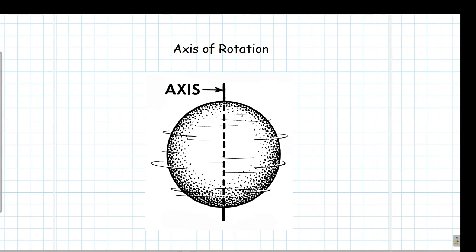All the points inside a rigid body make circular paths when executing rotational motion, and the centers of these circular paths lie along a straight line. For example, if a hard sphere is rotating, all points trace circular paths with different radii, but the centers of these circular paths lie along a single line. That line is called the axis of rotation.